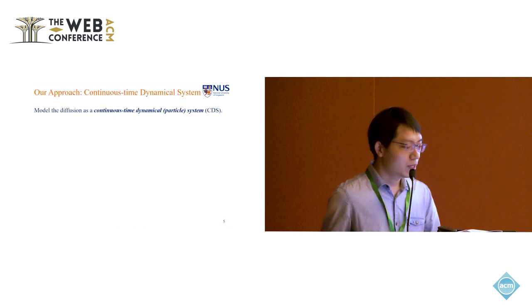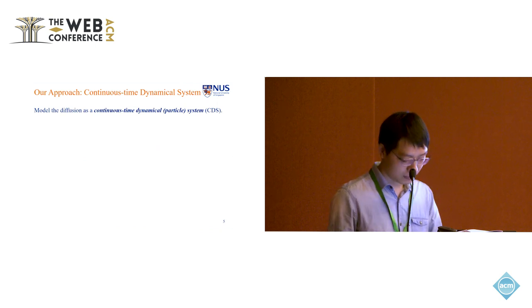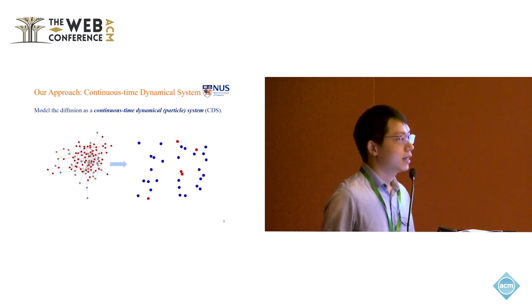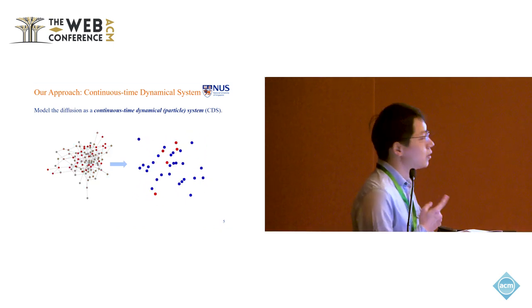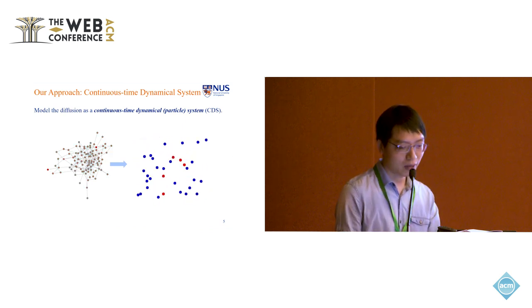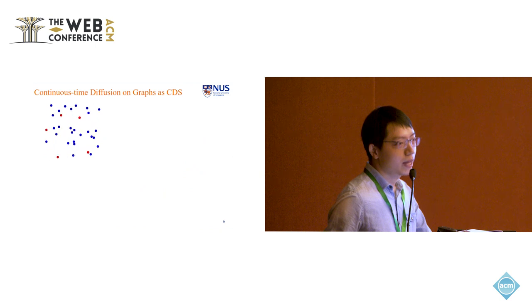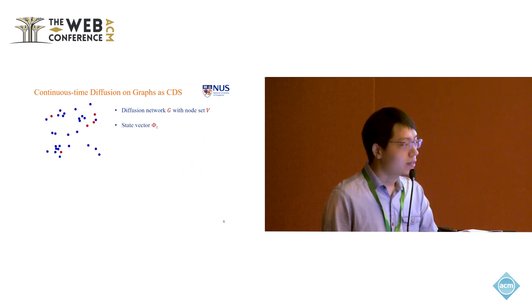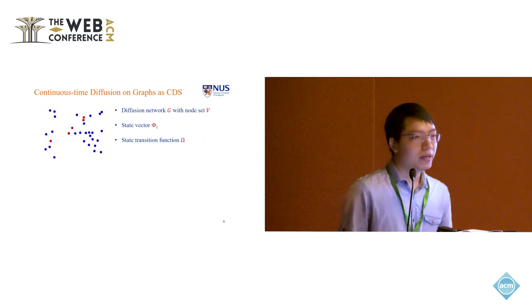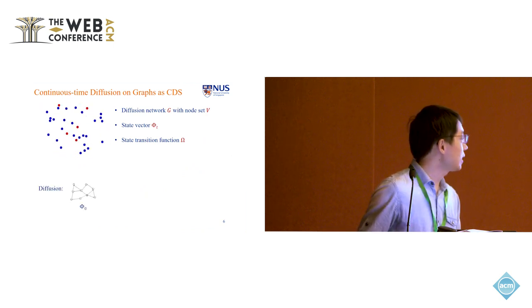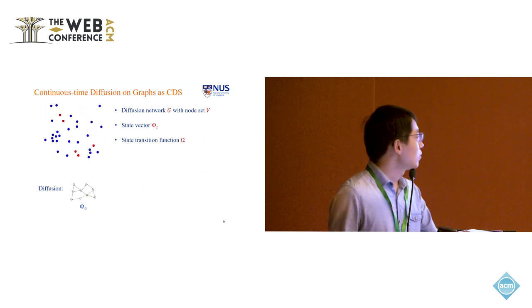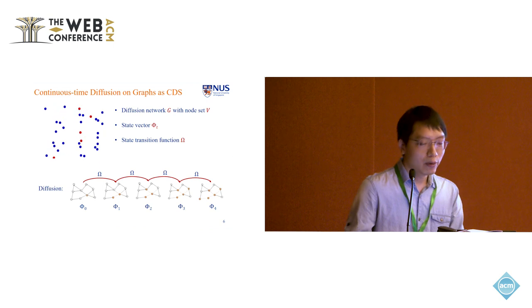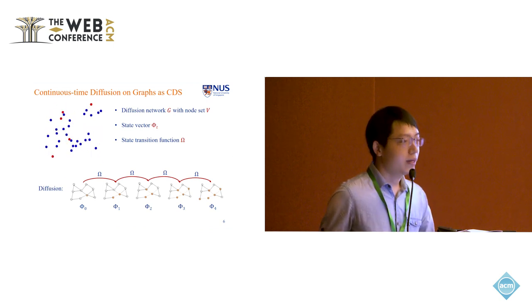So our approach here is to model the diffusion as a continuous-time dynamic particle system. Here is an illustration of the diffusion graph. And now we come to model it as a dynamic particle system. You need to pay attention that the particle here is not the node in the graph, but the dynamic diffusion process. So for this diffusion process, we use three notations to describe the system. First, it's the diffusion network g with node set. Here we do not have the edge set e. And a state vector phi t. And a state transition function omega. So the diffusion process can be described as follows. From the state vector phi 0, the transition omega here would transition phi 0 to phi 1, phi 2, and so on and so forth.